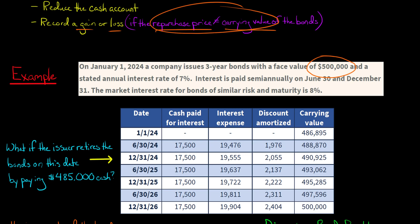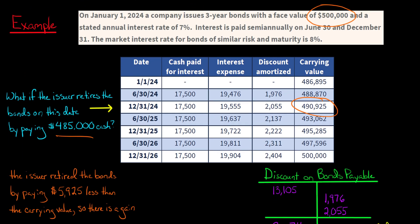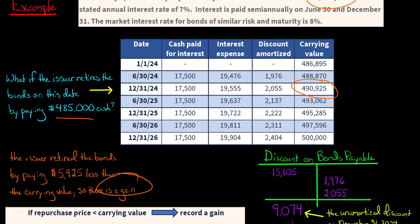What we're covering here is: what if the issuer retires the bonds before they mature? The bonds are set to mature on December 31st, 2026, but let's say on December 31st, 2024, when the carrying value of the bonds is $490,925, the issuer decides to retire the bonds and pays $485,000 cash to the investors who hold the bonds. Because they paid $485,000 and the carrying value is higher than that amount, they paid less than book value to retire the bonds — and in that case, we are going to have a gain.